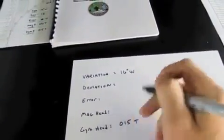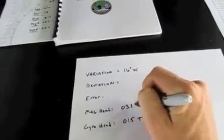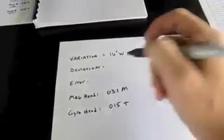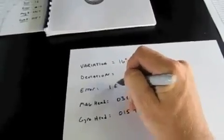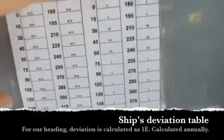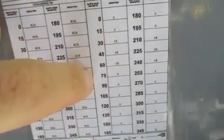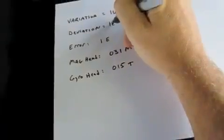So we said our gyro heading was 015 true and our magnetic heading was 031 magnetic. Previously we have calculated gyro error to be 1 degree east in this case. Again, that's another exercise. On the ship's deviation table, which is calculated annually, we read for our heading a deviation of 1 degree east.